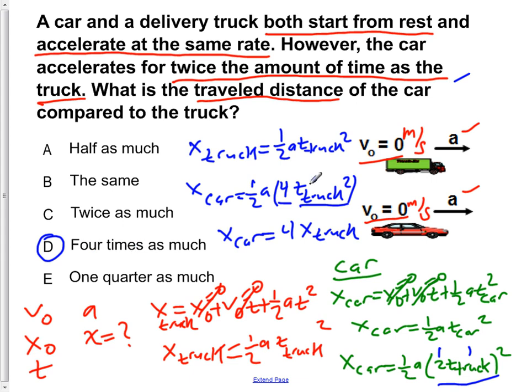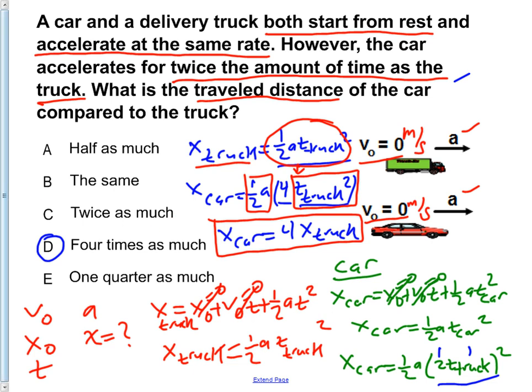And that's why when we calculate this out, we show that this, which is one-half A t truck squared, is the same as this of our x car. So x car is simply four times x truck. We're just simply taking this value here and subbing it into this equation here as x truck. So that's where we get x car is four times the distance that the truck traveled.